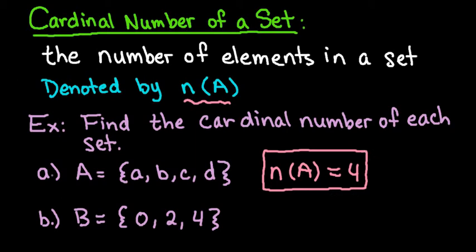Now if we look at set b, we're going to simply count how many are in here. So if I look, set b contains the elements 0, 2, and 4.